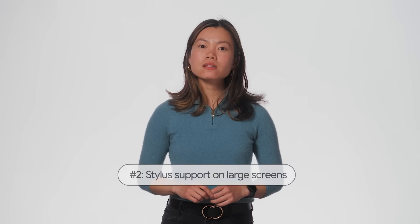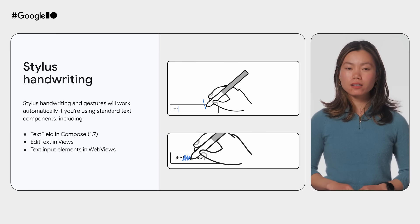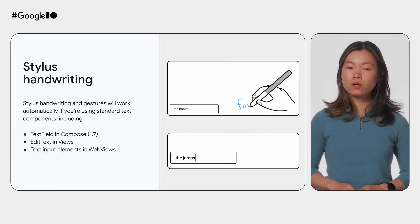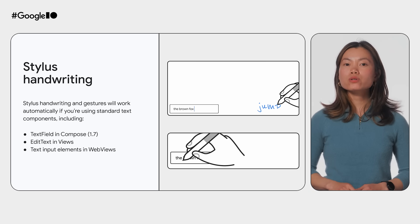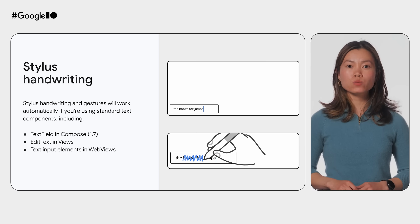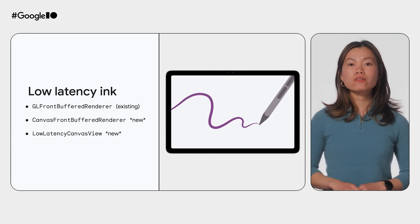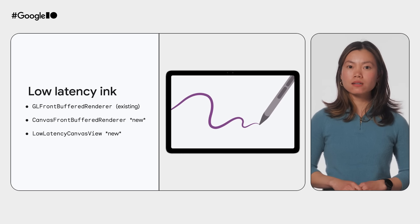Next, stylus support on large screens. We've added new support for handwriting in text fields for Views and Compose with stylus handwriting. Users can seamlessly input text without having to put down their stylus. Additionally, we've introduced two new APIs to lower stylus latency.